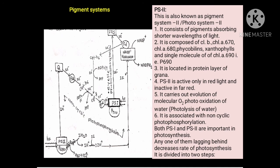Photosystem second is also known as pigment system second. It consists of pigments absorbing shorter wavelength of light. It is composed of chlorophyll B, chlorophyll A 670, chlorophyll A 680, phycobilins, xanthophylls, and a single molecule of chlorophyll A 690, that is P690. It is located in the protein layer of grana. Photosystem second is active only in red light and inactive in far-red light. It carries out the evolution of molecular O2 — that means photo oxidation of water, the photolysis of water, occurs. It is associated with non-cyclic photophosphorylation.